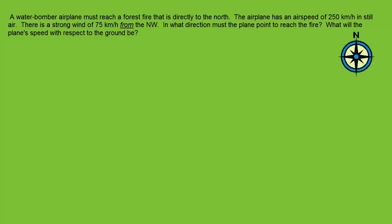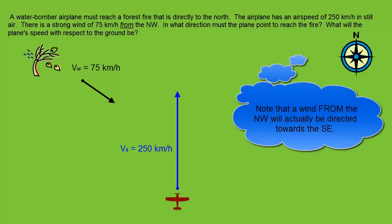The question is, a water bomber airplane has to reach a forest fire that's directly north. The airplane has an airspeed of 250 kilometers an hour in still air, and there's a strong wind of 75 kilometers an hour blowing in from the northwest. In what direction must the plane point to reach the fire, and what will the plane's speed be with respect to the ground?